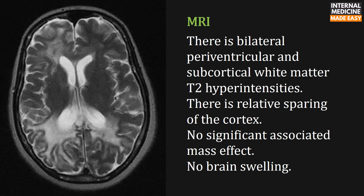In this MRI there is bilateral periventricular and subcortical white matter T2 hyperintensities. There is relative sparing of the cortex, no significant associated mass effect, and no brain swelling.